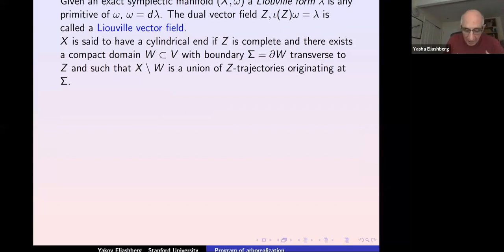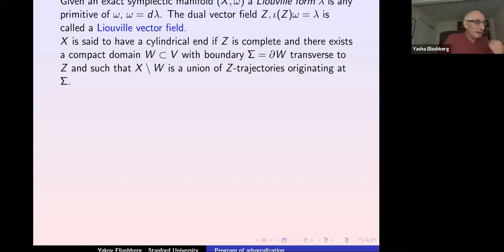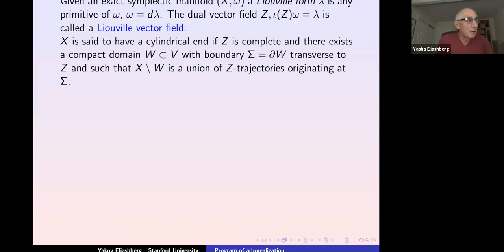Our program is to get rid of symplectic topology and replace it with a version of smooth topology, but I still need to first discuss symplectic topological notions. We will always be dealing with exact symplectic manifolds where the Liouville form is a primitive of the symplectic form. The important object is the dual vector field for this form.